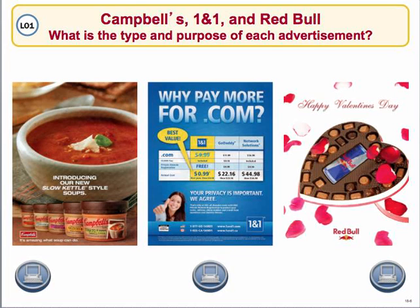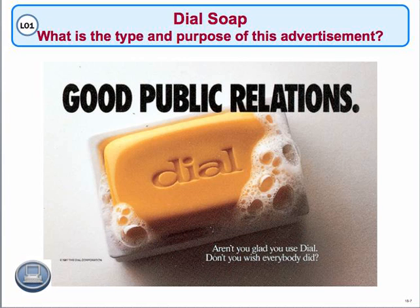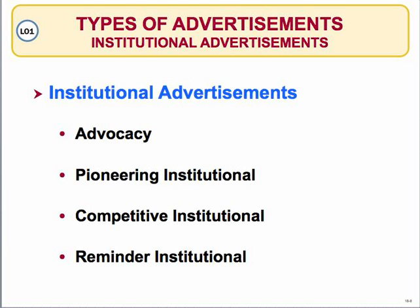How do you choose? Number one, you choose the different vehicles as far as the type of media — whether it be online, Twitter, social media, billboards, radio ads, TV ads, and so on — based on the media habits of the target market. So if they watch TV and certain shows, you should advertise there.